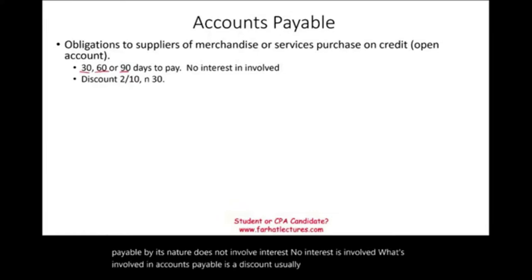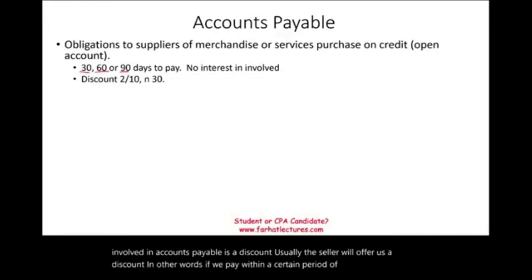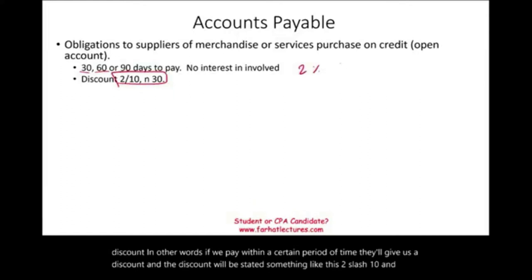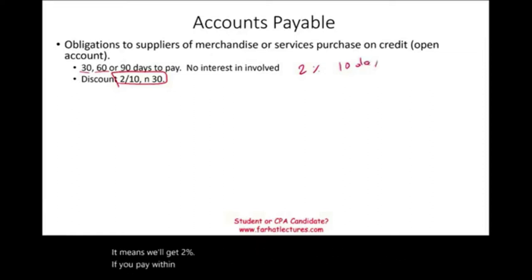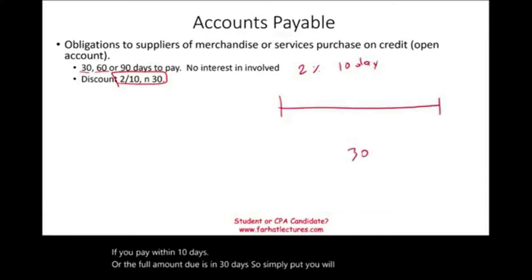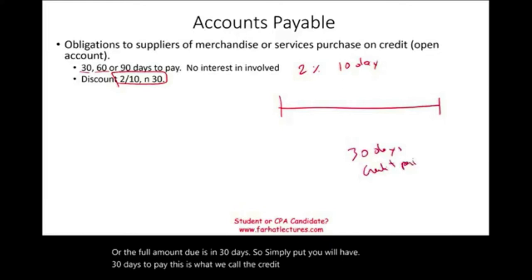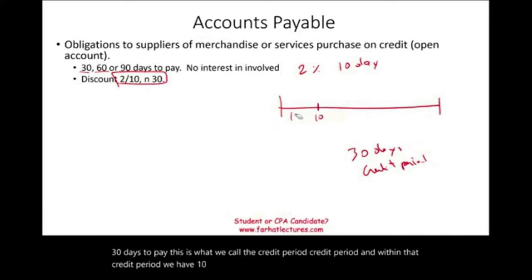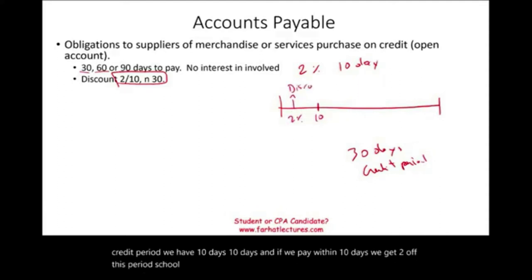Usually the seller will offer us a discount. If we pay within a certain period of time, they'll give us a discount stated as something like 2/10, n/30 — meaning we get 2% if we pay within 10 days, or the full amount is due in 30 days. We have 30 days to pay, called the credit period. Within that credit period, if we pay within the first 10 days, we get 2% off — that's called the discount period.